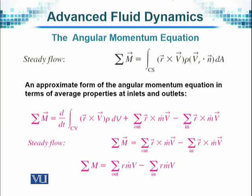An approximate form of the angular momentum equation in terms of average properties at inlets and outlets is given by this equation, which is very similar to the equation that we had in linear motion. There also we had similar terms, except that here the terms are substituted by taking into consideration the motion in the rotational direction.